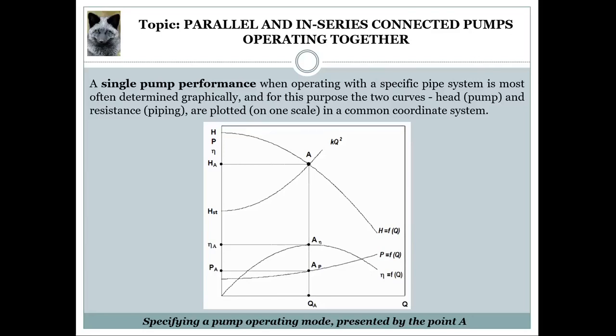Let's talk about parallel and in-series connected pumps operating together. A single pump's performance, when operating with a specific pipe system, is most often determined graphically. For this purpose, the pump head curve and the pipe system resistance curve are plotted on one scale in a common coordinate system, as given in this diagram. The equality of the pump head and the required pressure to overcome the hydraulic resistances is obtained by the intersect point between these two curves, presented by point A.